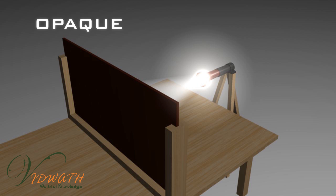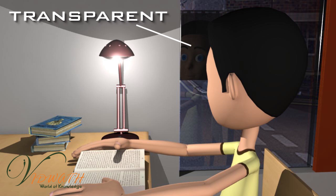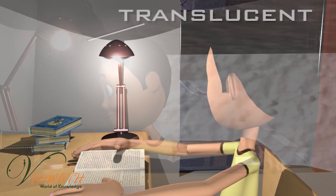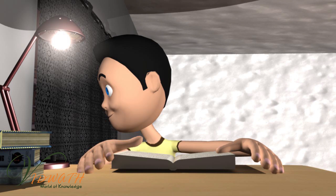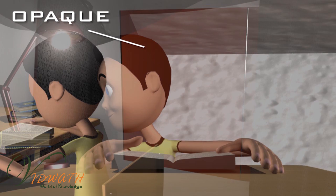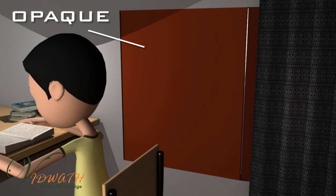So, when Alok was watching through the window, glass was a transparent object, the curtain was a translucent object, and the door was an opaque object.